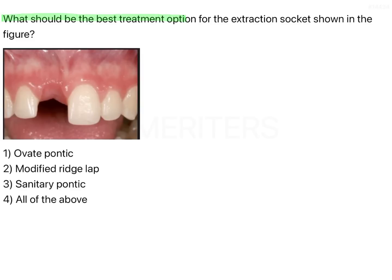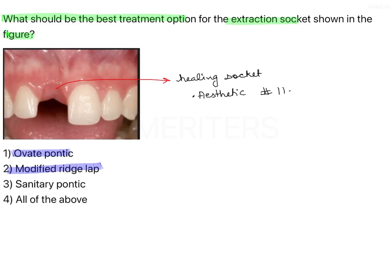What should be the best treatment option for the extraction socket shown in the figure? The image is showing a healing extraction socket in an aesthetic area where one tooth is missing. The options are Ovid Pontic, Modified Ridge Lab Pontic, Sanitary Pontic, and all of the above.